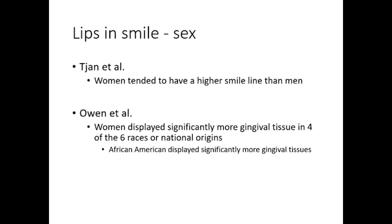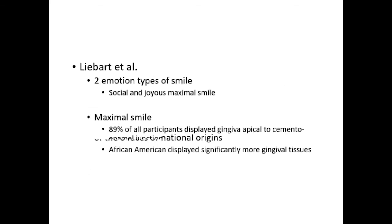Tan et al., in their classic high, average, and low smile classification, found women tend to have a higher smile line than men. OAN et al. reported that women displayed significantly more gingival tissue in four of the six races or national origins. They evaluated two emotional types of smiles — a social and joyous maximal smile. With the maximal smile, 89% of all participants displayed gingival tissue apical to the cementoenamel junction. The data did support that the social smile of women was broader than men's, but with a maximal smile, no significant difference was detected in gingival display.